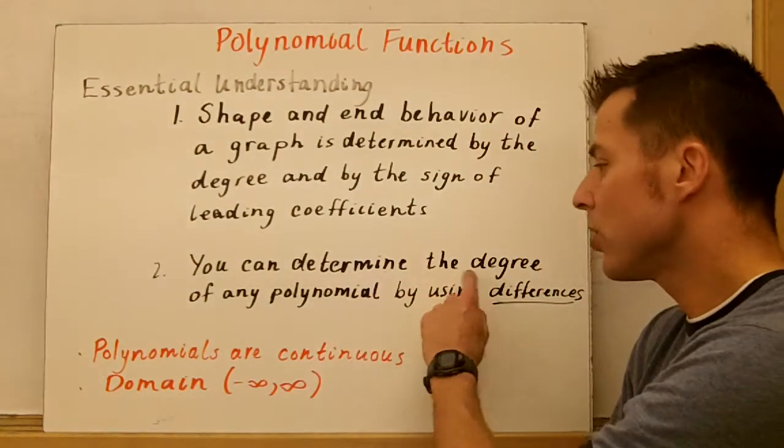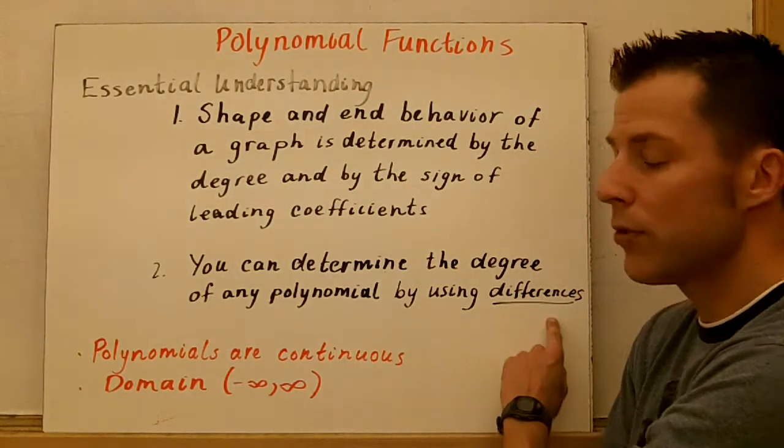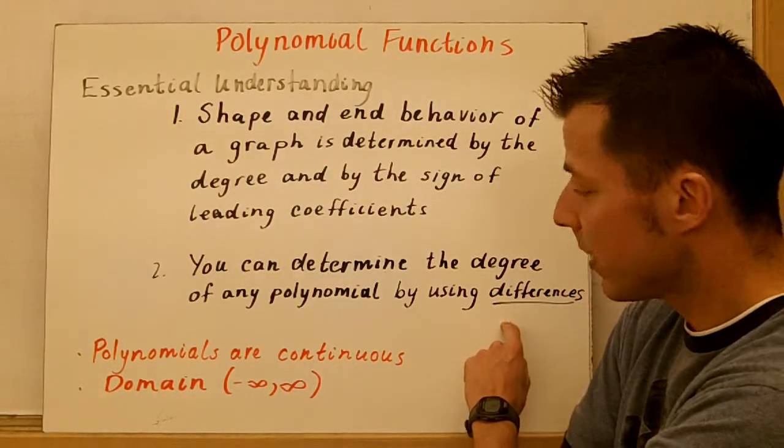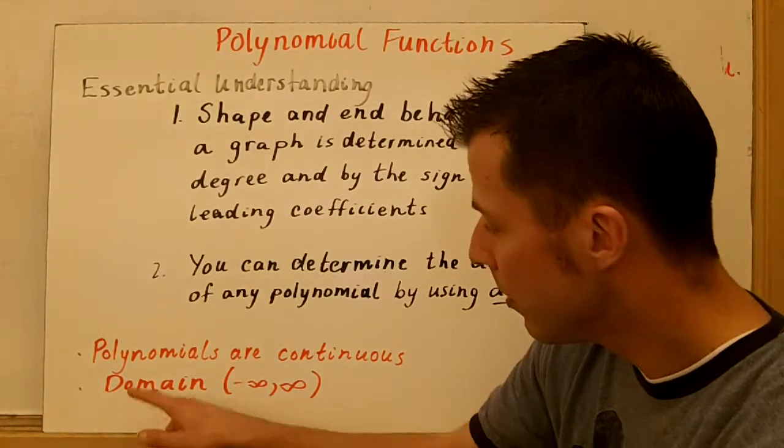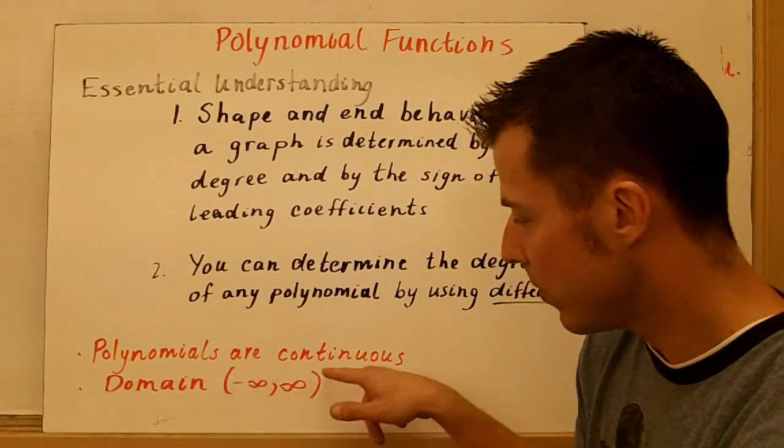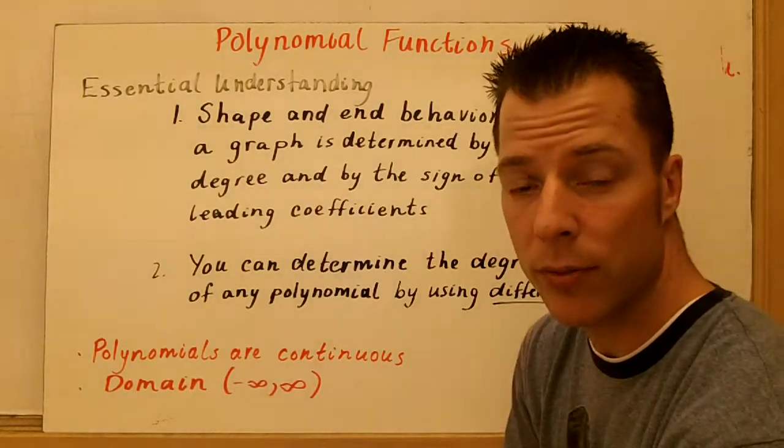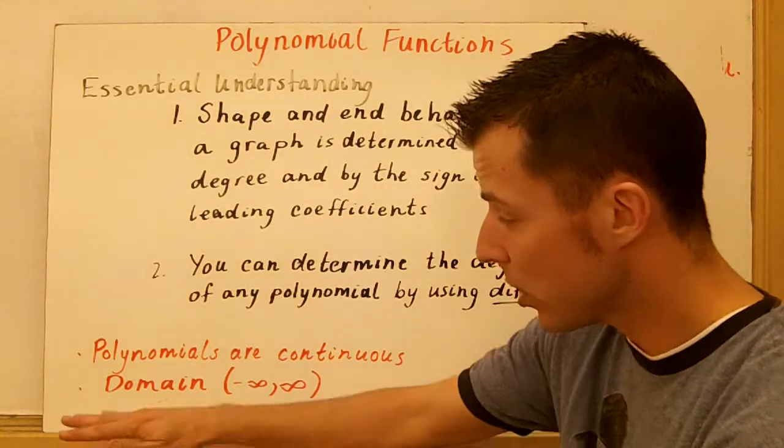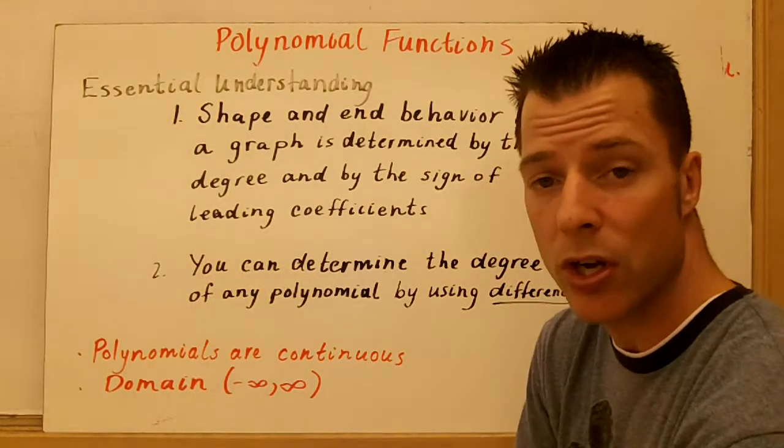You can determine the degree of any polynomial by using differences. And that's going to come in the last example from a table. Please know that polynomials are continuous and the domain is all real numbers for any polynomial. We're not talking range, just the domain is all real numbers.